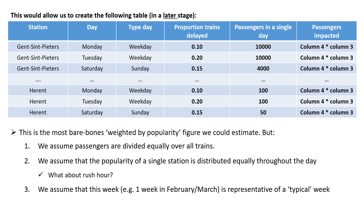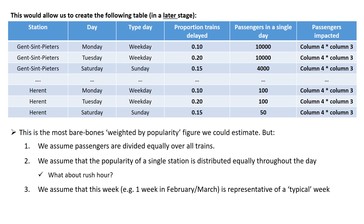I try to take these three critical remarks into account for my final solution. But for you guys, I only expected you to collect the CSV file for the passenger estimates and seven CSV files containing the planned and actual arrival and departure times of trains in Belgian stations. That's it. What comes next is a reflection on how to make a more valid estimate than that.